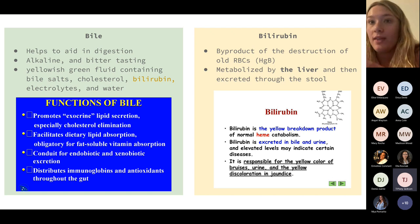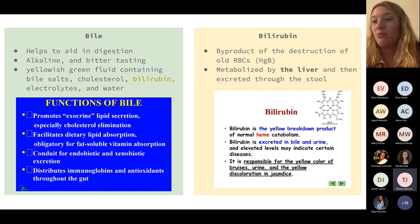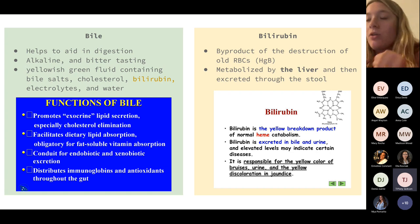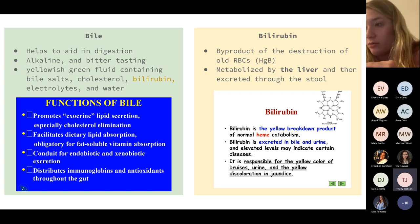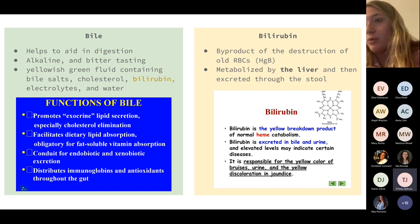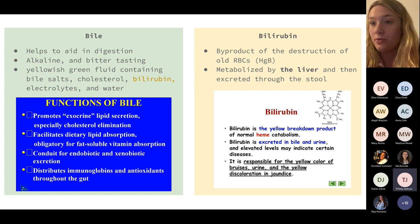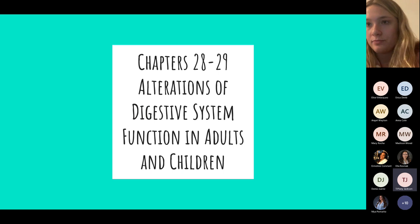Bilirubin is a byproduct of the destruction of old red blood cells. When RBCs break down, they release bilirubin, which gets metabolized by the liver and excreted through the stool. So remember: the GI system excretes everything, not just food.